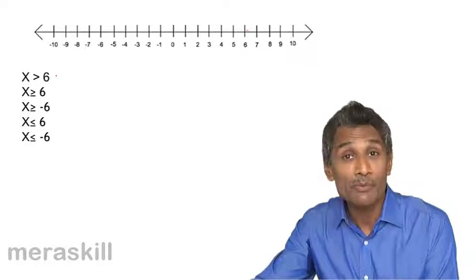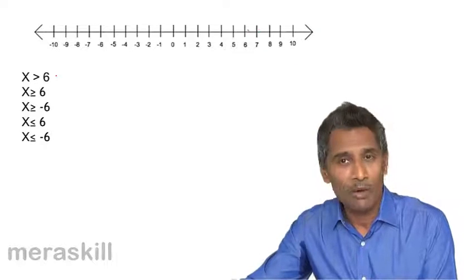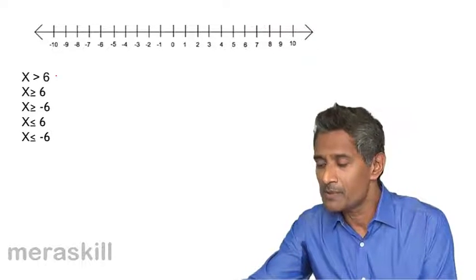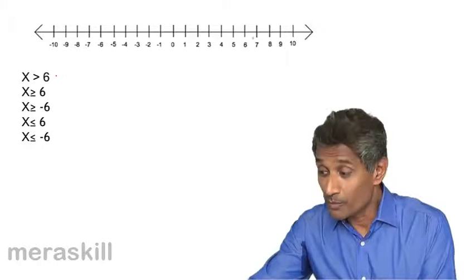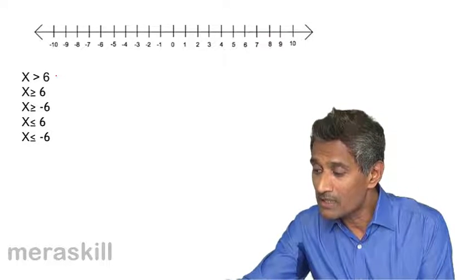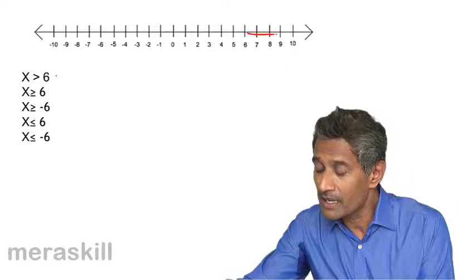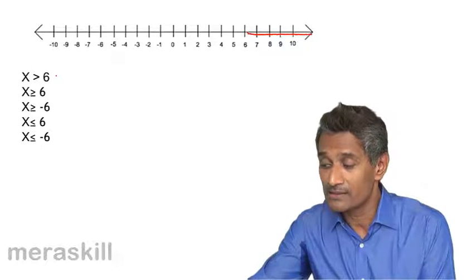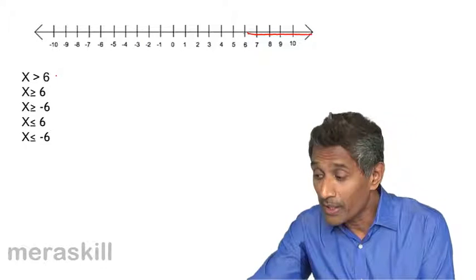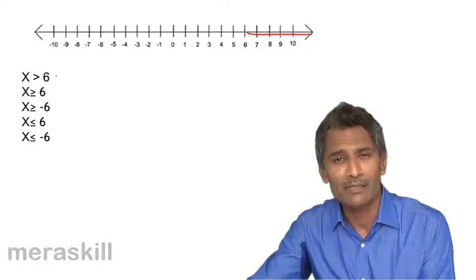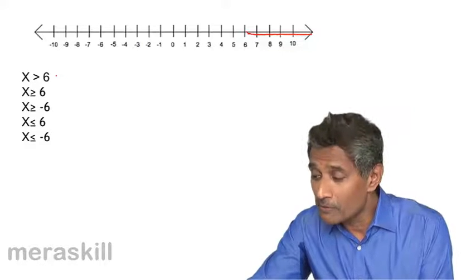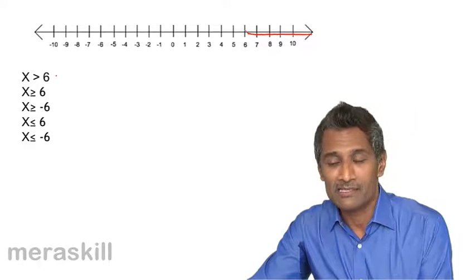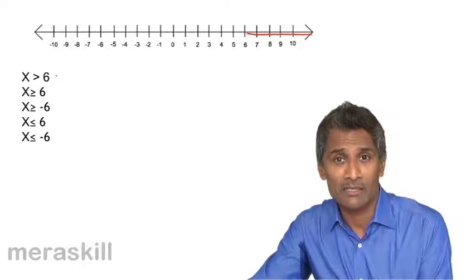So when you're saying x greater than 6, obviously you have to look at 6 over here. This is where 6 is. And on any number line, as we move towards the right, the numbers become larger and larger. So when you're talking about x greater than 6, we start a little beyond 6, and all this is covered in x is greater than 6. Mind you, we are not involving 6. Sometimes your pen is incapable of exactly marking x greater than 6, but you understand the concept.